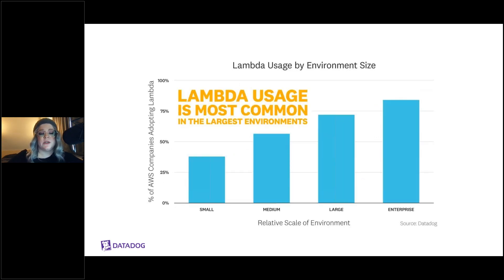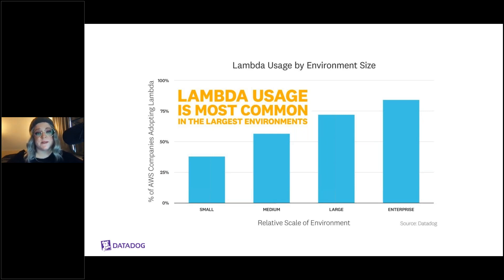Larger organizations are embracing Lambda the quickest, which is interesting because usually the stereotype is that larger companies are last to embrace new technologies because there are too many blockers. But larger organizations are finding value in the serverless model the most.